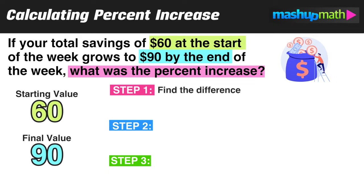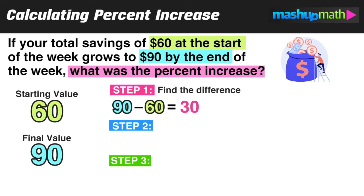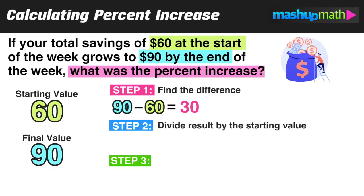Step one: find the difference. Take the final value and the starting value and find the difference between those two numbers. The key tip here is to always put the larger value first. So in this case, 90 minus 60 equals 30. The difference between the two values is 30.